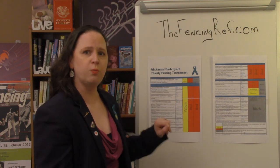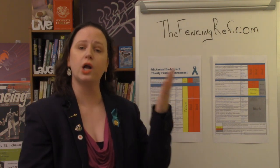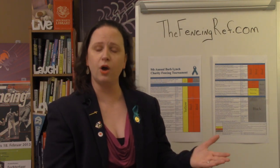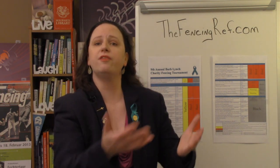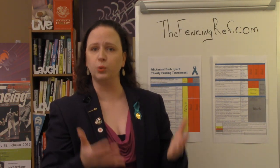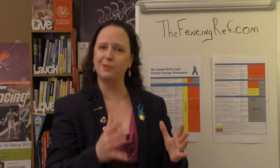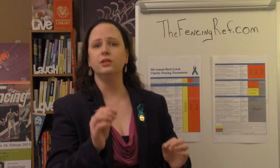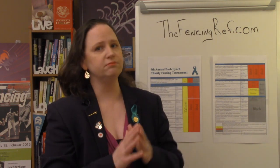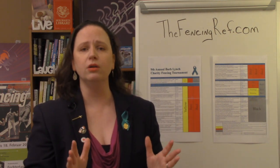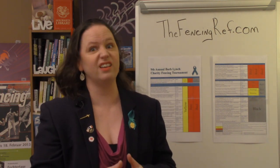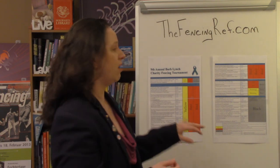Remember, the group one penalties are a yellow card, and a second violation of the rule is a red. We don't do yellow plus yellow equals red — it's yellow to red. Super simple, and a lot easier than it used to be honestly.